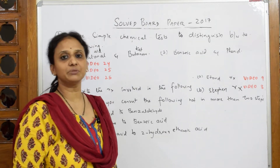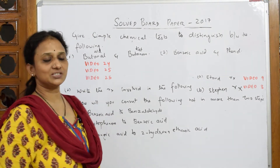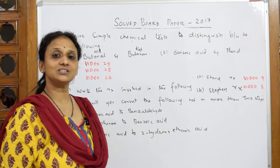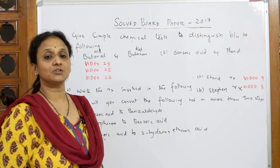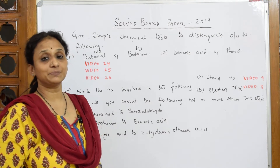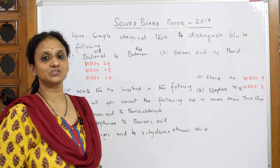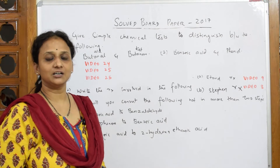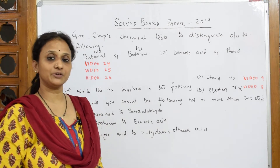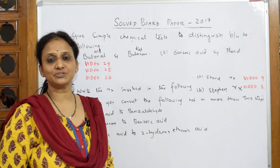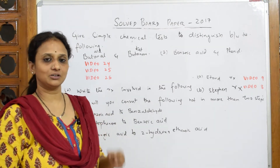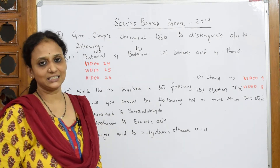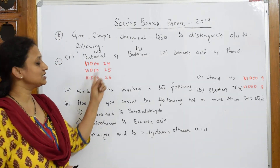Now, suppose in the exam you are not remembering the reaction - what to do? You can write: butanol is an aldehyde. When Tollens reagent is added to butanol, it forms a silver mirror or silver color precipitate on the walls of the test tube, which confirms the presence of aldehyde. For Fehling's, you can write the formation of cuprous oxide Cu2O - a red precipitate. For Benedict's, mention the brick red color. Please watch that video for Tollens, Fehling's and Benedict's.